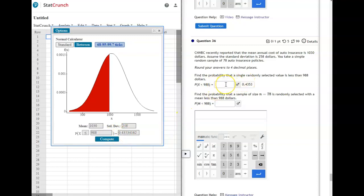So that is just the way we did it before, but on the second one it says find the probability that a sample size of n equals 78 is randomly selected with a mean less than. So same value, but this time we're doing it for the sample instead of just one individual person.